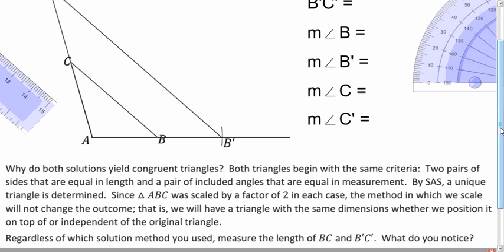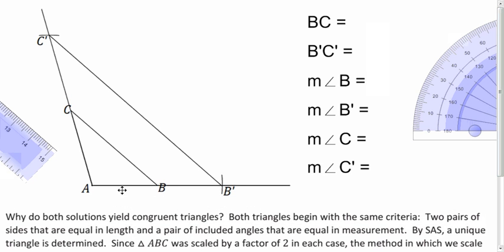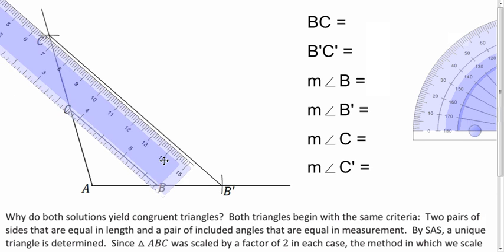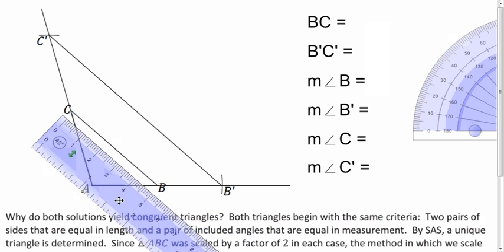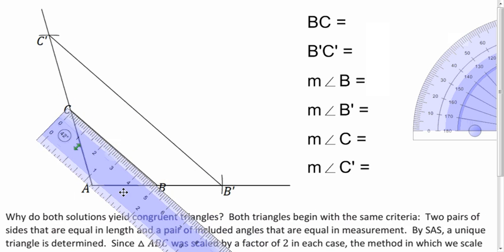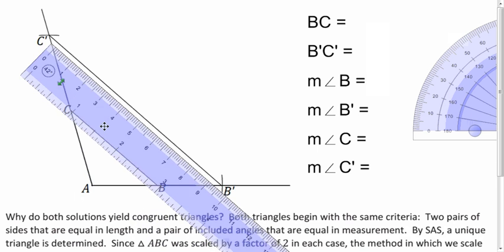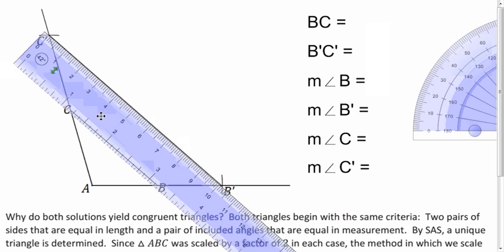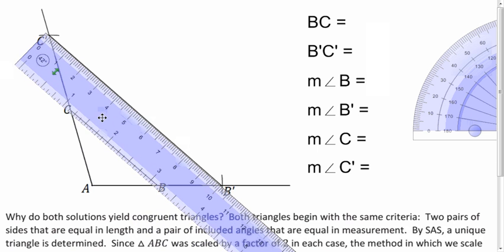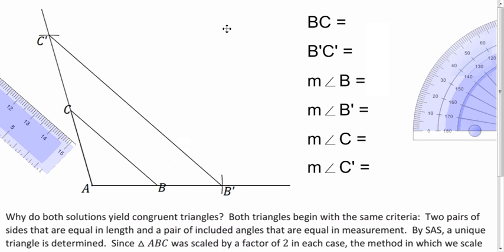So let's measure BC and B prime C prime. What do we get? Well, we know that AB prime is going to be double of AB and AC prime is going to be double AC. But does that hold for B prime C prime? Let's see. If we measure BC, we get five centimeters here. And if we measure C prime or B prime C prime, we get 10 centimeters. So yeah, looks like that property holds.